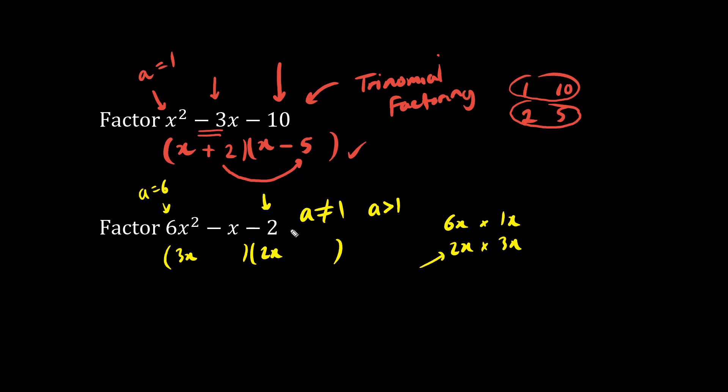And what times what is negative 2? Let's just guess. Let's try 2 and 1. We have 6 and 4 does not make negative 1, so we guessed incorrectly.